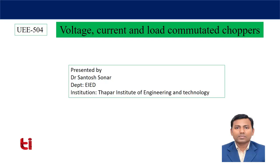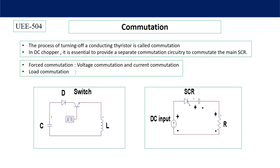Today I will discuss about these things. What is commutation? The process of turning off a conducting thyristor is called commutation. In DC chopper, it is essential to provide a separate commutation circuitry to commutate the main SCR, because natural reverse voltage is not coming. Basically two types of commutation circuits are there: forced commutation and load commutation.